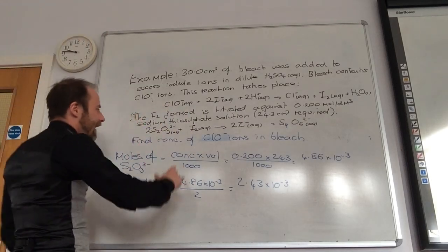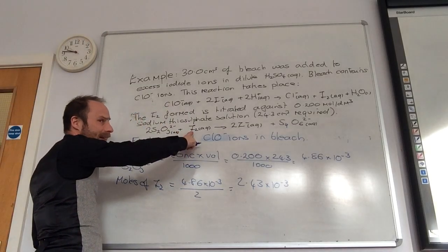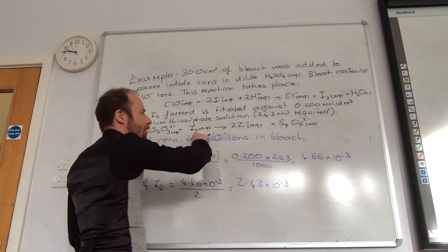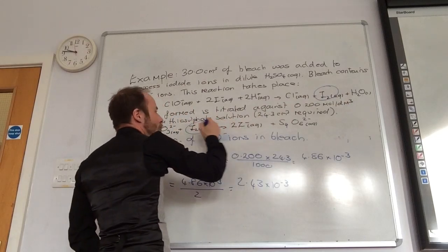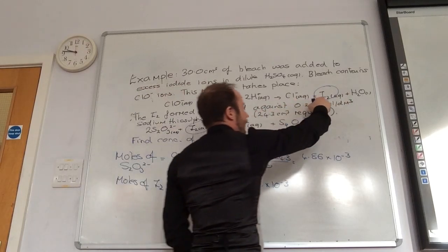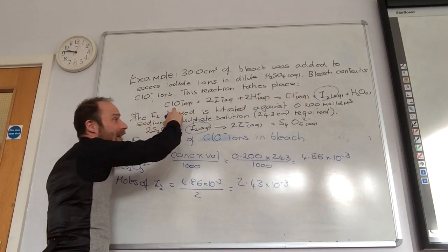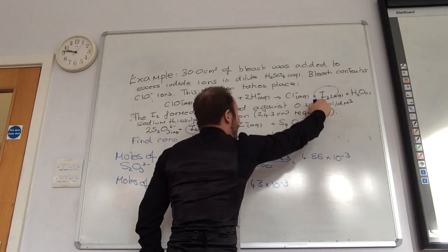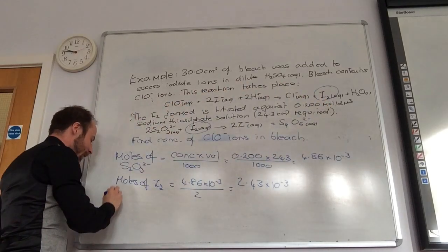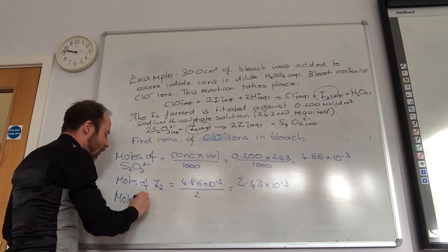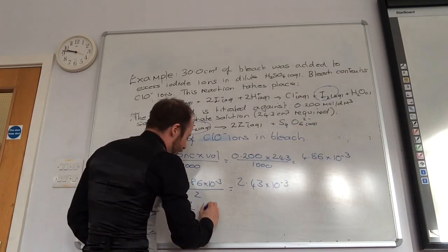So I have worked out how much of that I had. Then you need to take it backwards to use this equation. For every, remember that, all of that iodine came from that. So what do they want me to find out? They want me to find this. So I now need to relate that to that. For every one of those, how many of those must I start with? One. Brilliant. So how many moles of CLO minus do I have? 2.43 times 10 to the minus 3. Fabulous.